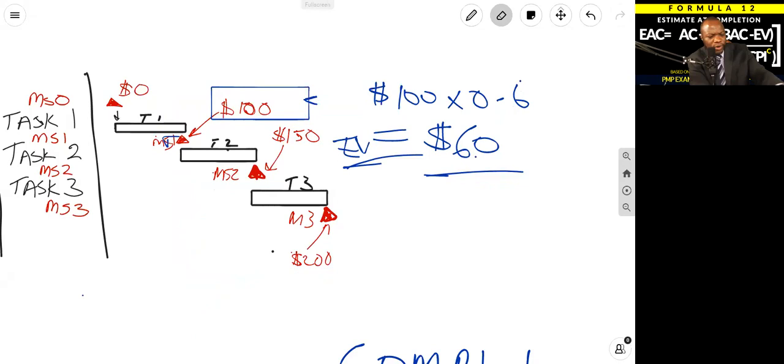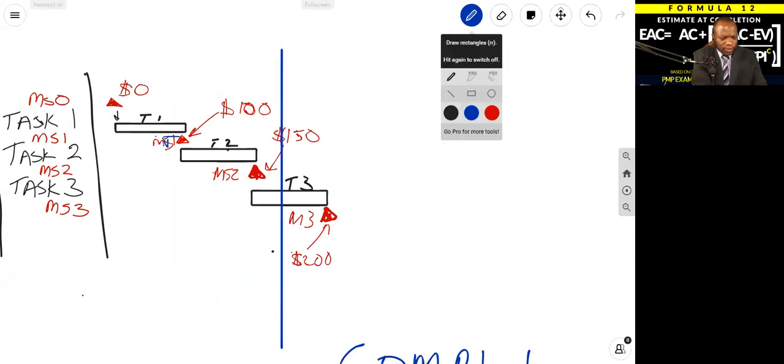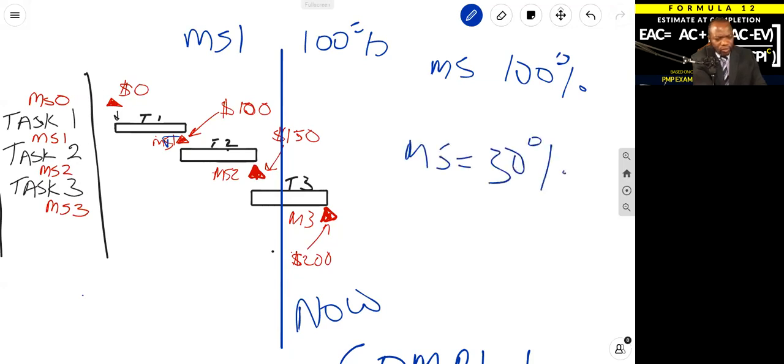If you are proceeding on the project and at a different point in time, you wanted to compute earned value based on certain statuses, you do something like this. Let's say we're here. If that is time now, and you can see, let's say milestone one is 100% done, milestone two is 100% done, milestone three, let's say it's 30% done.